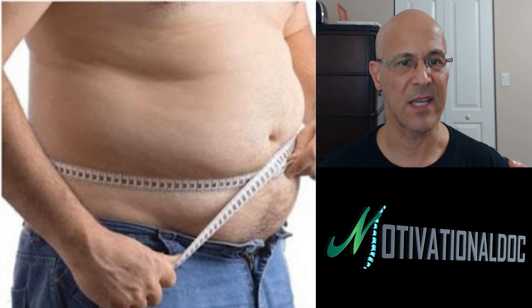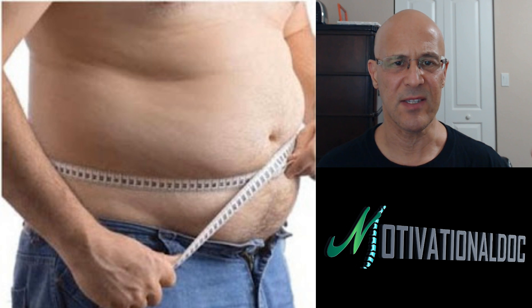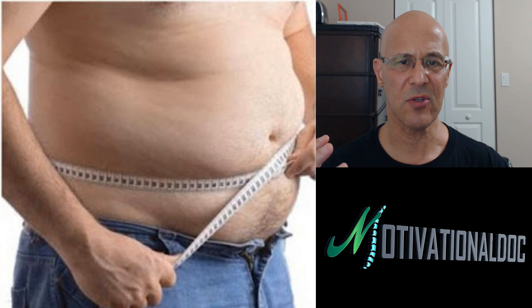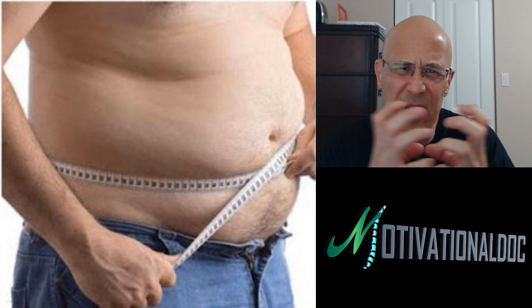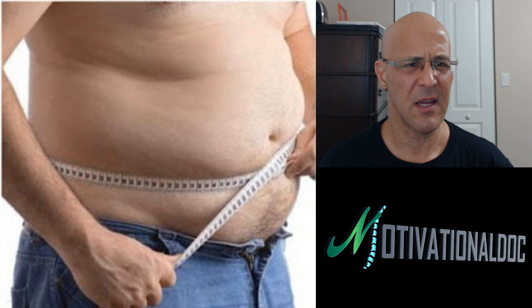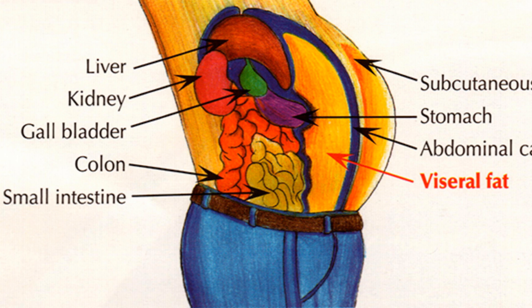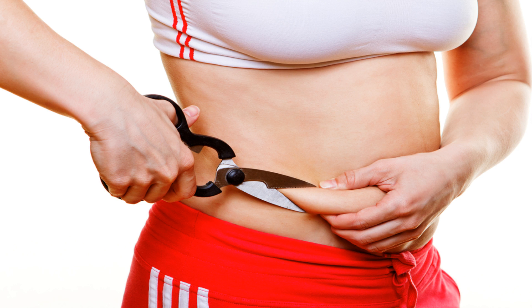The first thing I want to talk about is the difference between visceral fat and subcutaneous fat. Visceral fat generally is deep — it covers the organs, kind of squeezes everything in. As you can see in this picture, it kind of squeezes over the organs and strangulates them.